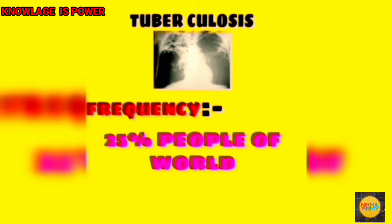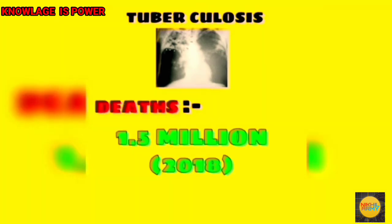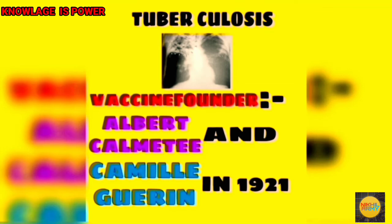The frequency of TB disease is 25 percent of the world's population. The deaths by TB disease were 1.5 million in 2018. The vaccine founder of TB disease is Albert Calmette and Camille Guérin in 1921 from France.